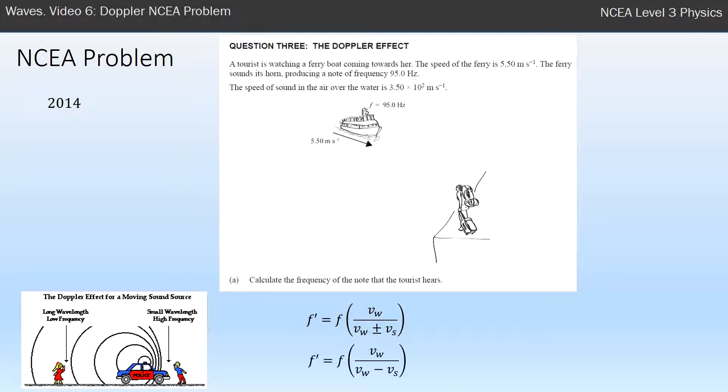So in this case, because the ferry is moving towards them, I'm going to use the minus. Pretty straightforward now, I put my values in. So my original frequency is 95, 350 is the velocity of the wave and velocity of the source is 5.5. Do the calculation and we get a larger frequency than 95, which is 96.5 hertz.